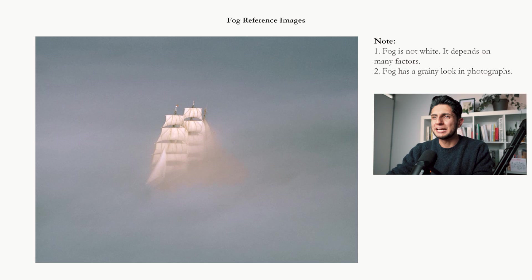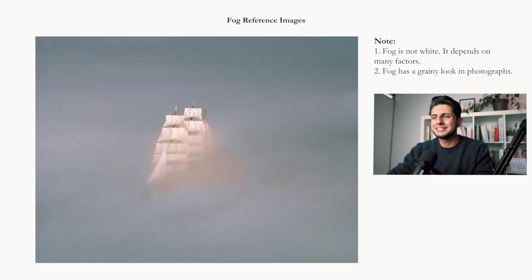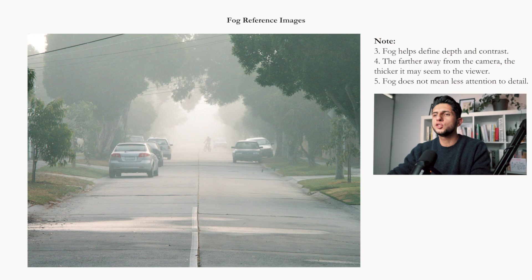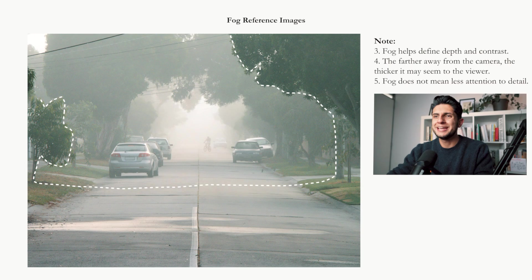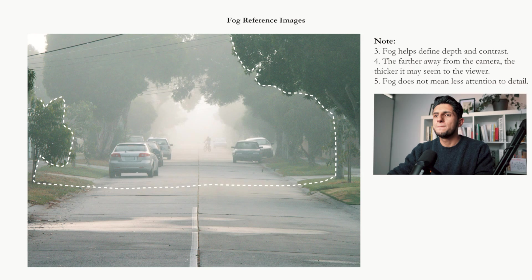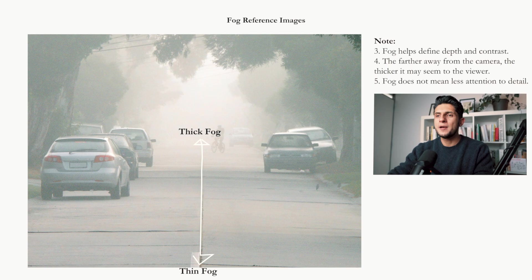The second thing to notice is that fog has a grainy look in photographs — a texture that we want to replicate inside of Photoshop, because it exists in real life. You can also see this texture in volumetric fog from an aerial view. If we look at a photograph of a normal street, you can see how fog helps to define depth in an image. The fog in the foreground is very subtle but you can instantly separate elements like a tree from a car. As you get deeper, the fog becomes thicker as the camera gets farther away.